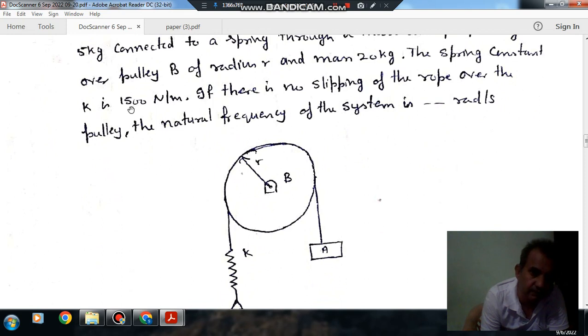The spring constant K is 1500 N per meter. If there is no slipping of rope over the pulley, the natural frequency of the system is to be found.